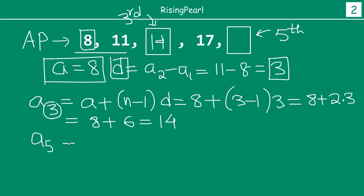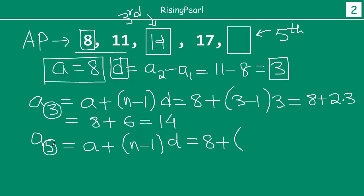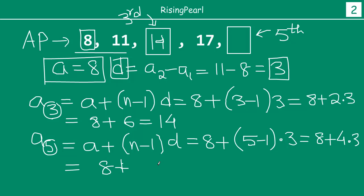For the fifth term, we use the same formula: A plus (N minus 1) times D equals 8 plus (5 minus 1) times 3 equals 8 plus 4 times 3 equals 8 plus 12, which equals 20. So the fifth term is 20.